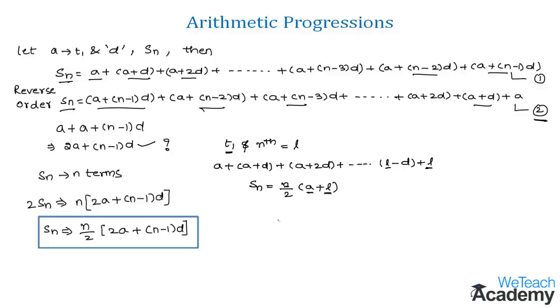We also have another formula of the sum of n natural numbers and it is given by n into n plus 1 by 2. And the sum of natural numbers can be denoted by sigma n. So the proof of this formula we have proved in our previous videos by using mathematical induction.